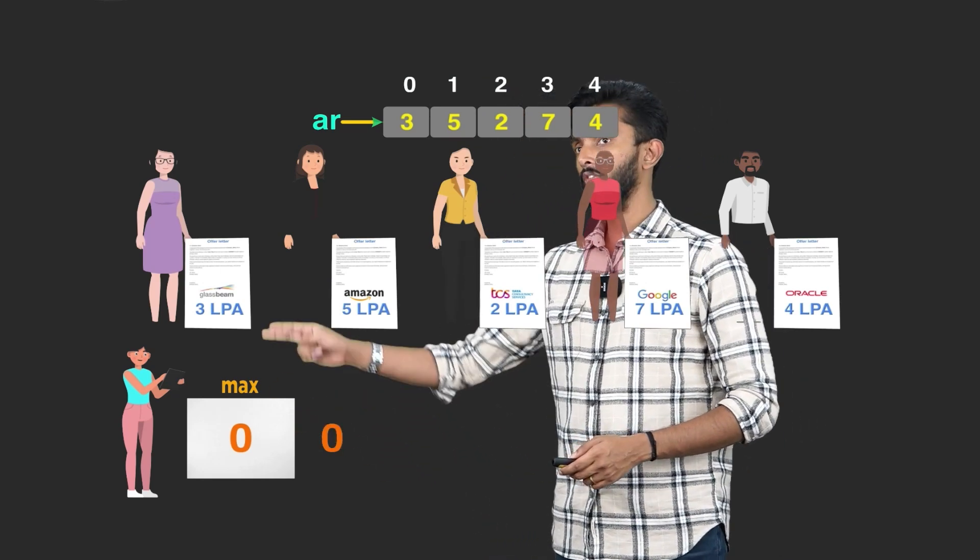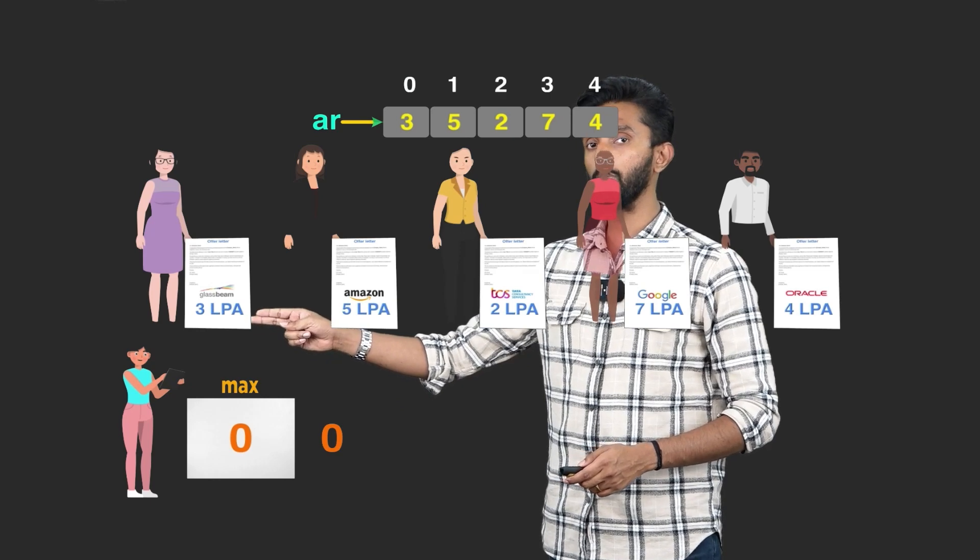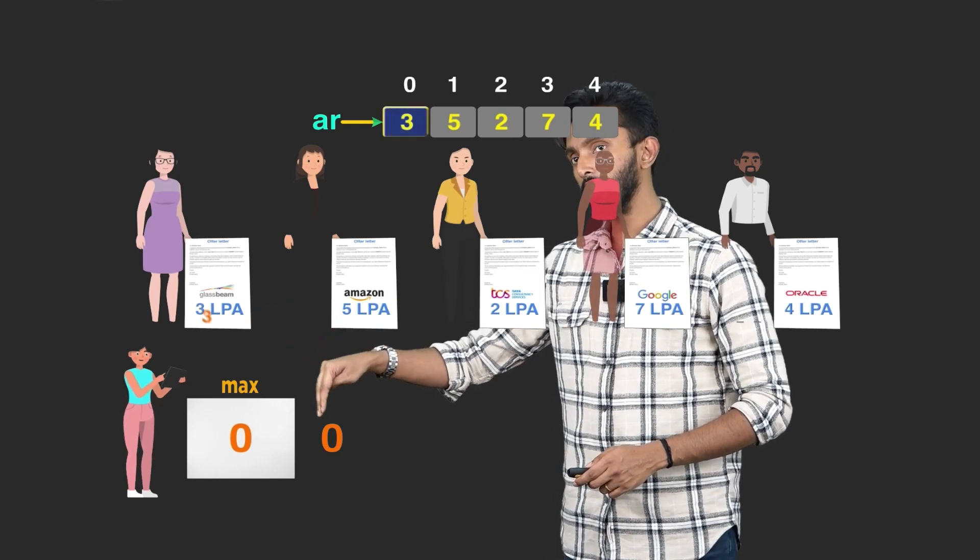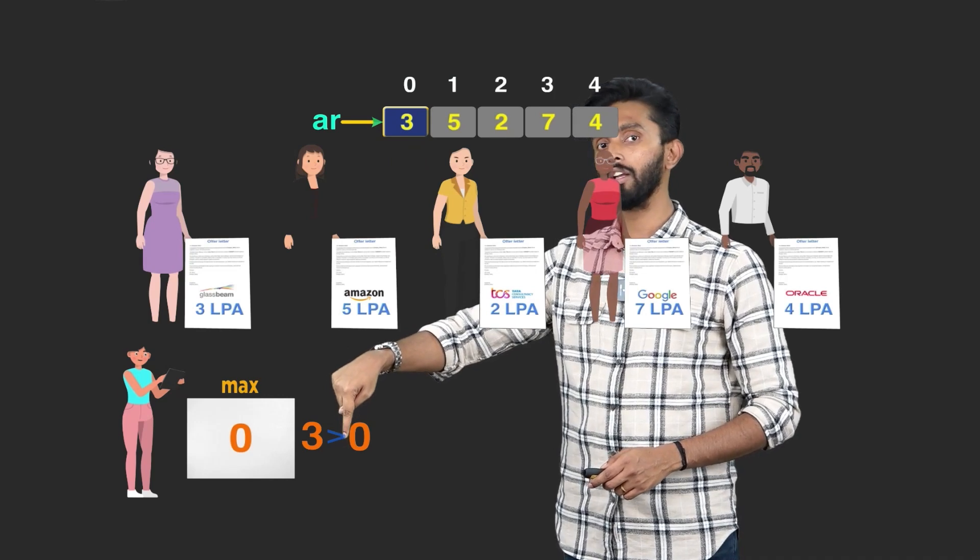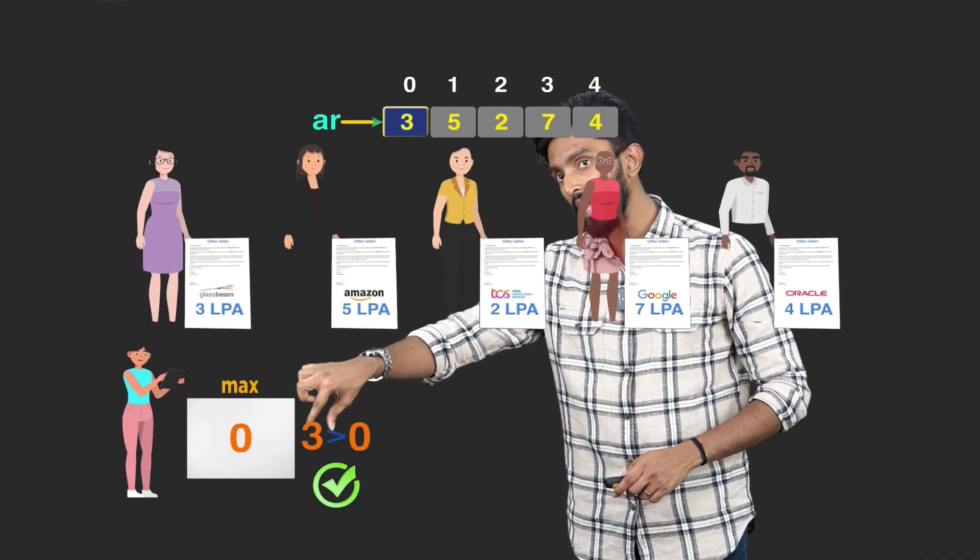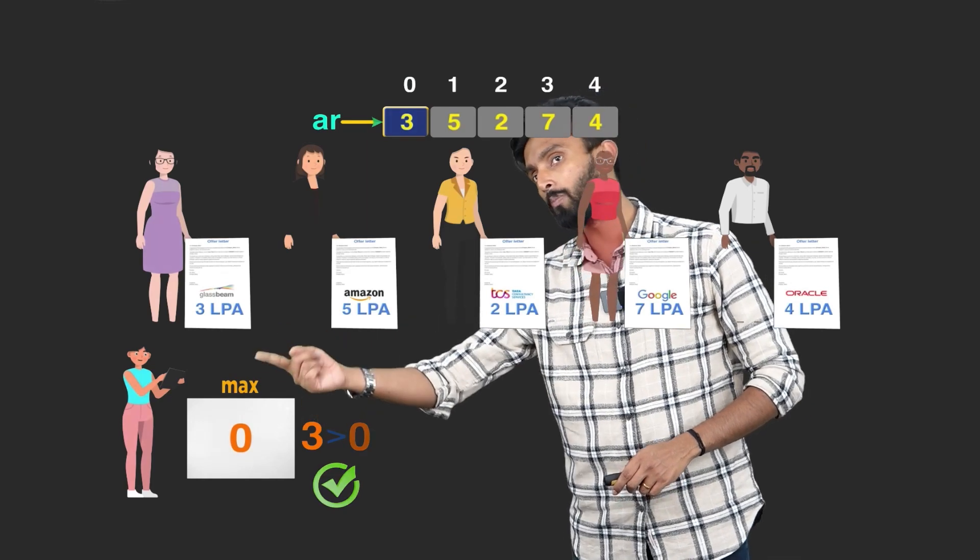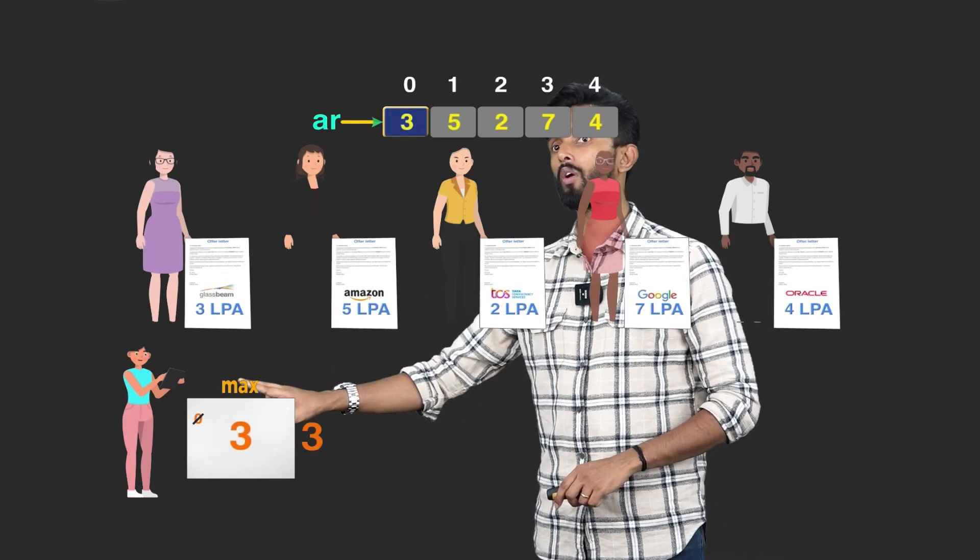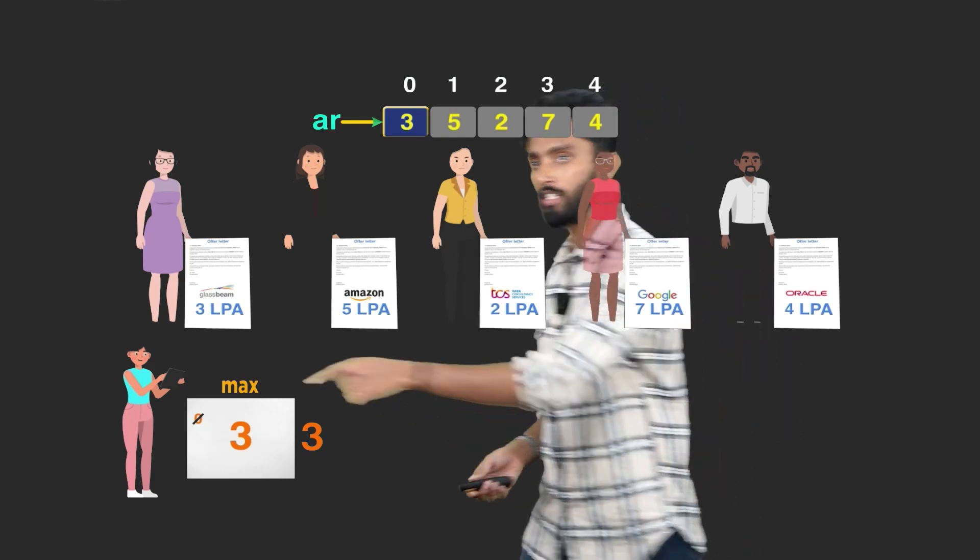Your job is to take your value, compare it with the value of this person. Now, if your value is smaller than this person's value or this person's value is greater than your value, then whatever is their value, you should store inside. Very simple. I will start with the first person's package. What is the first person's package? 3.